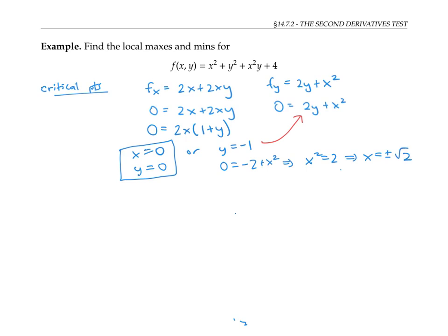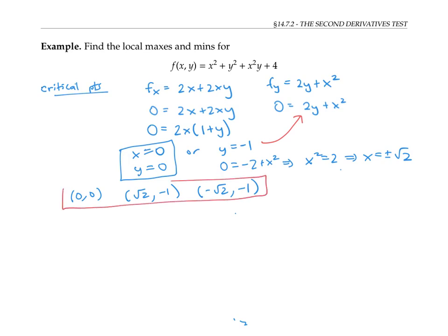So the critical points are (0, 0), (√2, −1), and (−√2, −1). Notice that there are no places where f sub x or f sub y do not exist, so these are all of our critical points. For each critical point, we need to decide if it's a local max, a local min, a saddle, or maybe none of the above — that's where the second derivatives test is helpful.